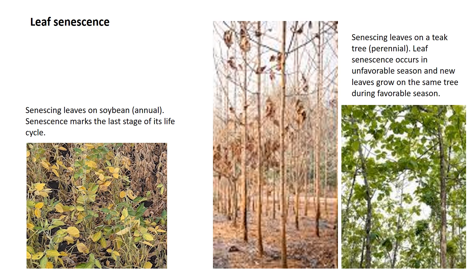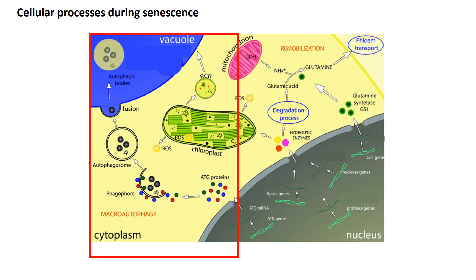Unlike deciduous species, evergreen tree species shed leaves throughout the year, rather than in a specific season. Leaf senescence is characterized by leaf yellowing, but what happens at the cellular level in a senescing cell? Several cellular processes occur which lead to chloroplast degradation, remobilizing the contents to other tissues through phloem, and ultimately result in cell death. We shall see some of these processes in the next few slides.